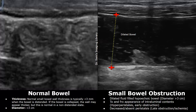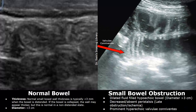During late obstruction or ischemia, you may find decreased or absent peristaltic movements in a dilated fluid-filled bowel. This is another case showing small bowel obstruction — a dilated fluid-filled bowel with absent peristalsis, indicating late obstruction or ischemia.